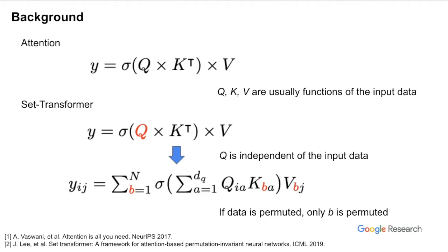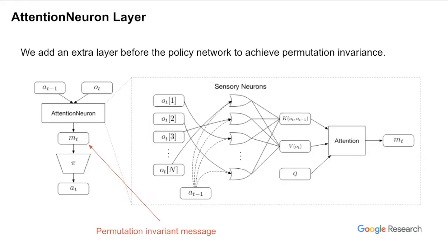This formula lets us convert an observation signal from the environment into a permutation invariant message, which is then fed into the agent's policy network. This is the architecture of our proposed method. We add an extra layer, which we call the attention neuron, in front of the agent's policy network. At each step, the attention neuron accepts the observation at the current step and the action from the previous step, then generates a permutation invariant message to the downstream system.